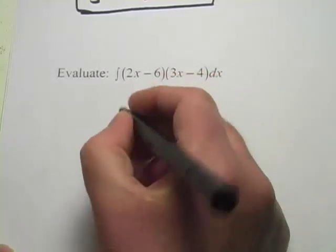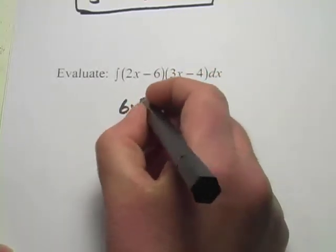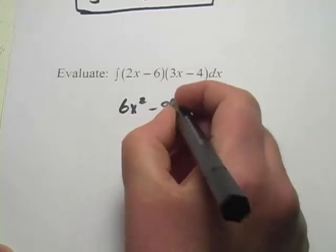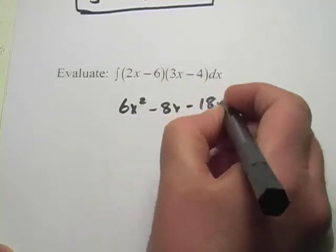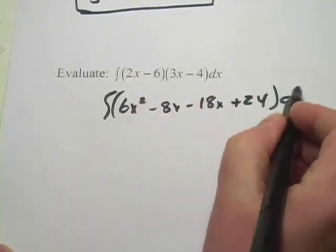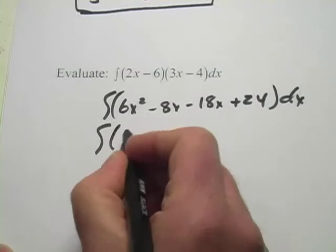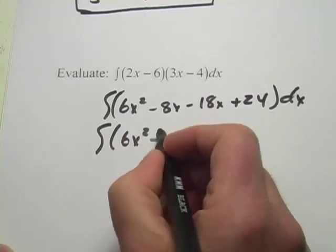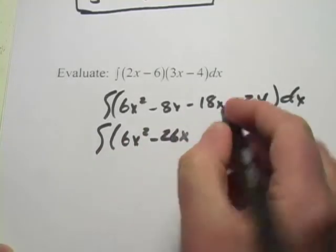And we can use this reverse power rule to take the integral of the polynomial. So let's go ahead and do that. 2x times 3x is 6x squared minus 8x minus 18x plus 24. And we're taking the integral of this. We'll simplify a little bit. 6x squared minus 26x plus 24.